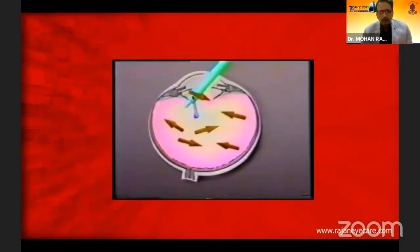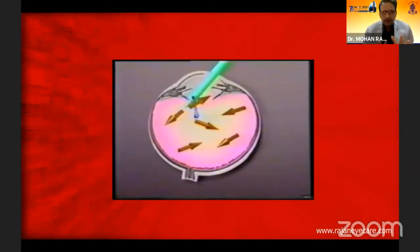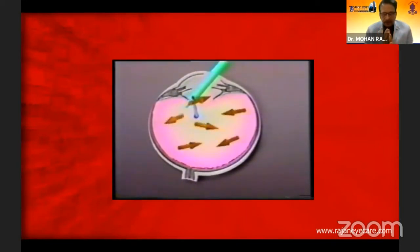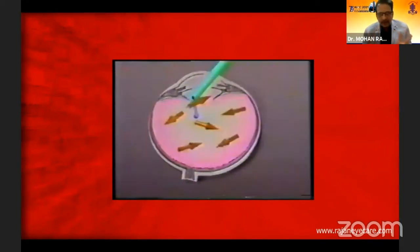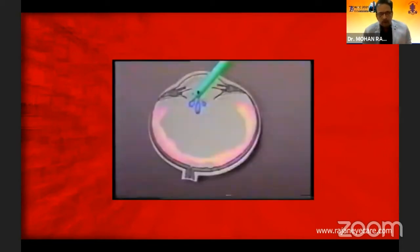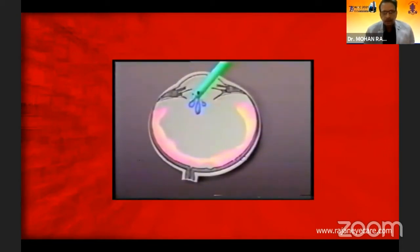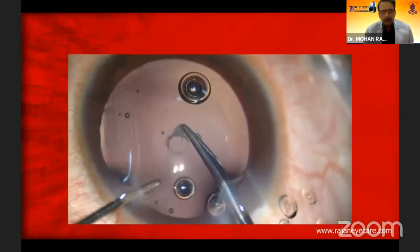As you know, when you have a posterior capsule rent, if you use coaxial irrigation aspiration, that is going to make matters worse because it's going to enlarge the tear and more and more vitreous starts coming into the anterior chamber. And this is going to make — it's like a tsunami. So always use bimanual irrigation. It's very important.